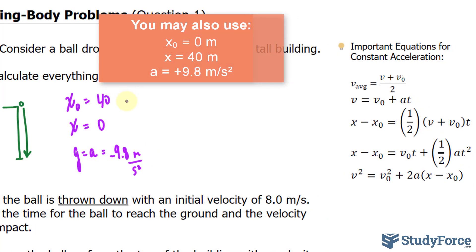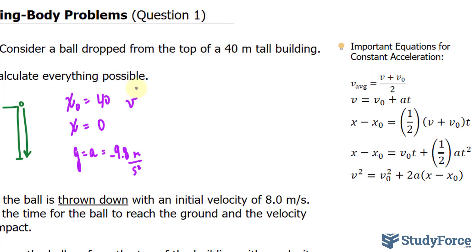One other thing that you can write down here is that the velocity or the speed of the ball right at the beginning is nothing. So the velocity represented by v sub zero is equal to zero.